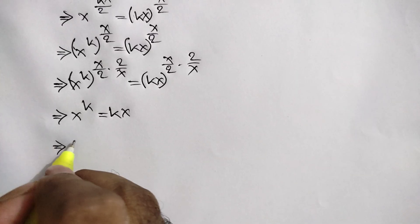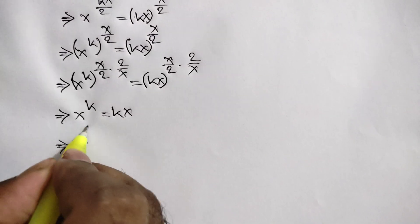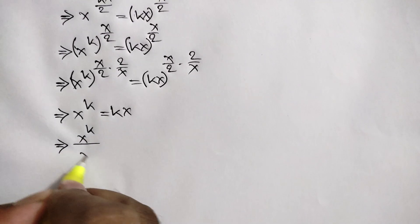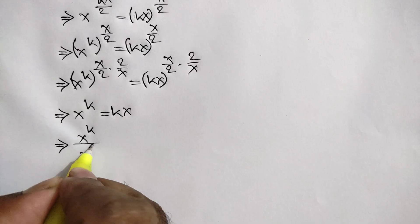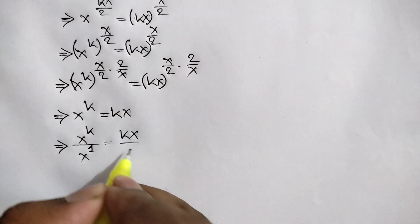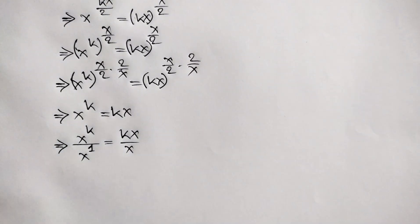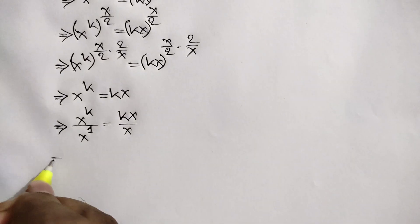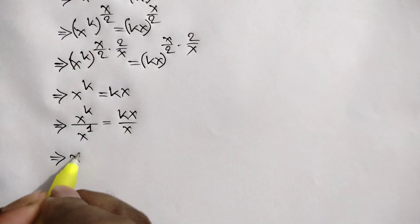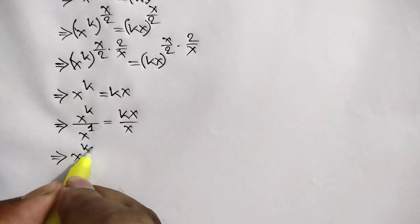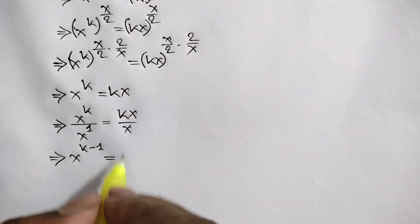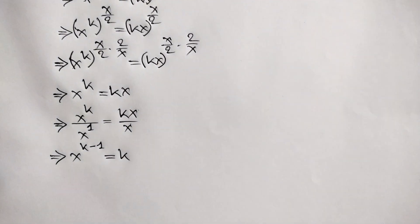Now dividing both sides by x, we can write x to the power k over x. That means we can write x to the power k minus 1 is equal to kx over x, which gives us k. So we get x to the power k minus 1 is equal to k.